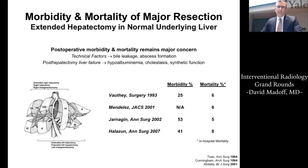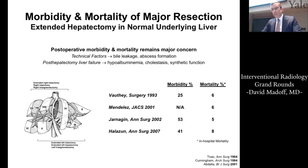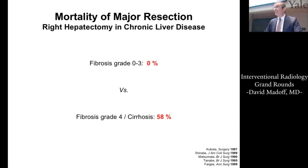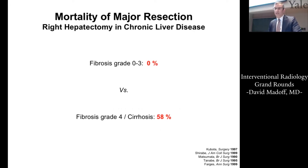There has been extensive work in hepatic resection, and while postoperative mortality is quite low, complications such as fluid retention, impaired synthetic function, and hyperbilirubinemia still contribute significantly to the postoperative course. Data from the last decade show morbidity and mortality as high as 8% in patients with normal underlying liver. In the setting of chronic liver disease, patients with cirrhosis undergoing right hepatectomy have a nearly 60% chance of mortality after major hepatic resection.